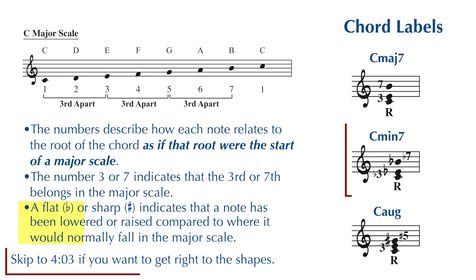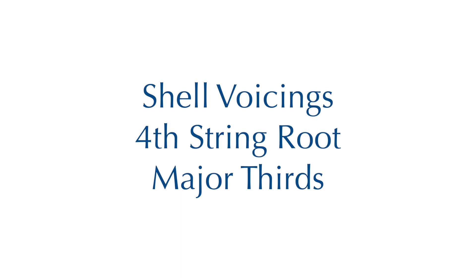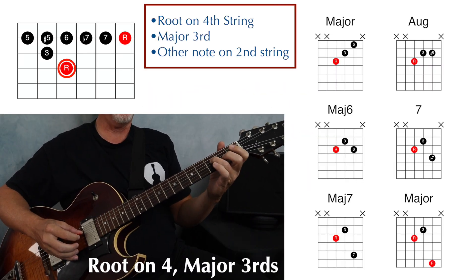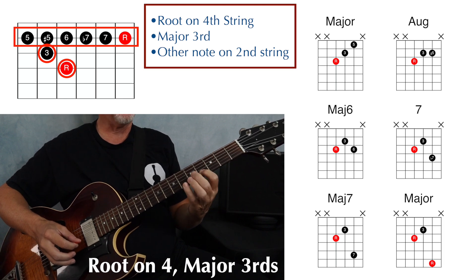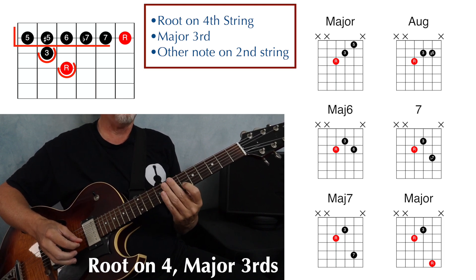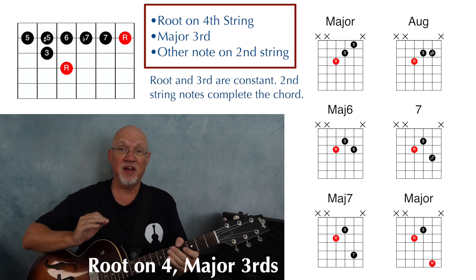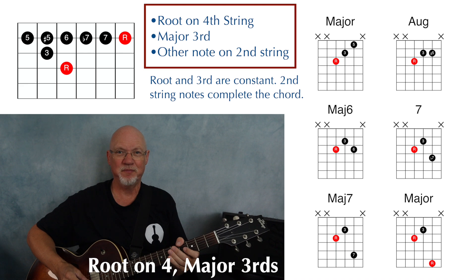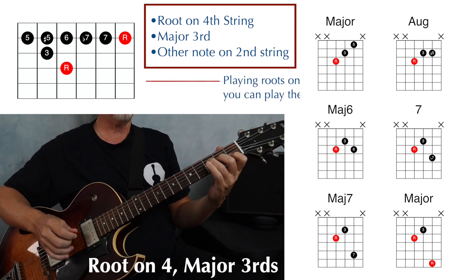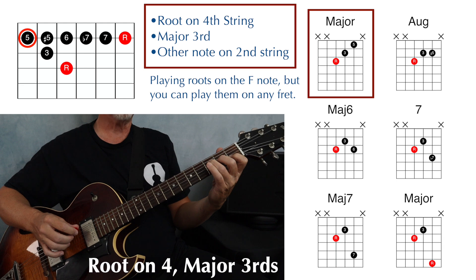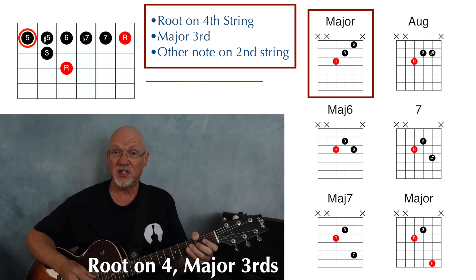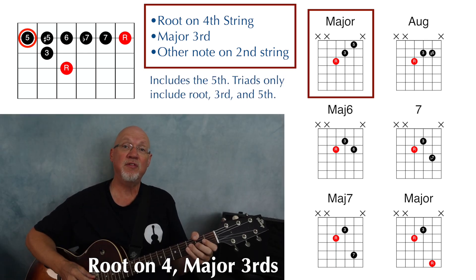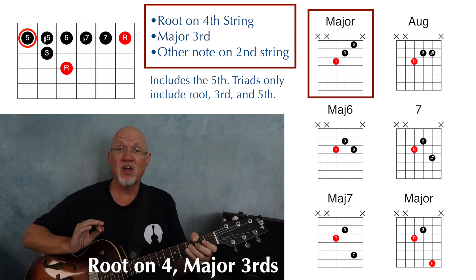Now the shell voicings. This series has a root on the fourth string, a major third on the third string, and then some other note on the second string. The root and the third are constant — it's that moving note on the second string that completes the chord. If I play root, third, and fifth, I have an F major chord with the root on string four, fret three. This is one of those shell voicings that does include the fifth — major triads have a root, third, and fifth with no seventh.